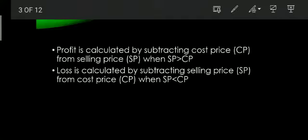If you are selling at a higher price than you bought, that difference is your profit. If you are selling at a lower price, then cost price minus selling price gives you your loss. For percentage profit, the formula is: percentage profit equals profit divided by cost price, multiplied by 100. First calculate profit, then divide by cost price, then multiply by 100.